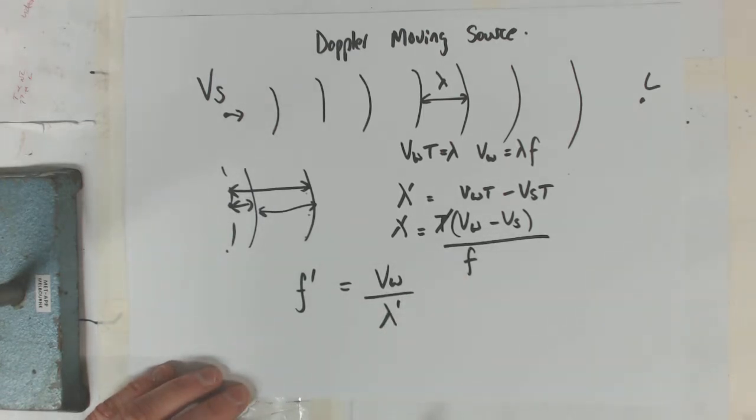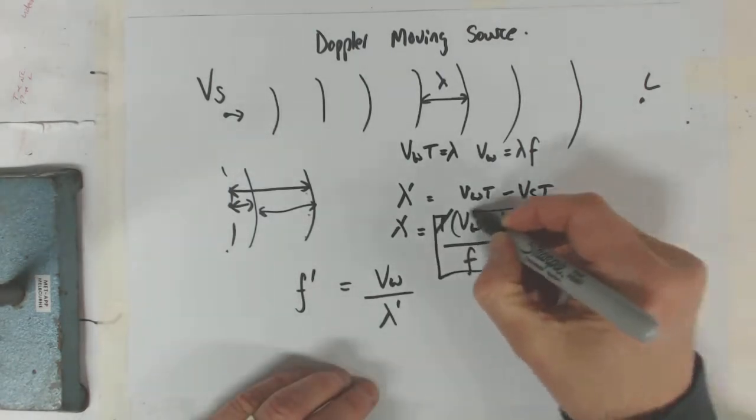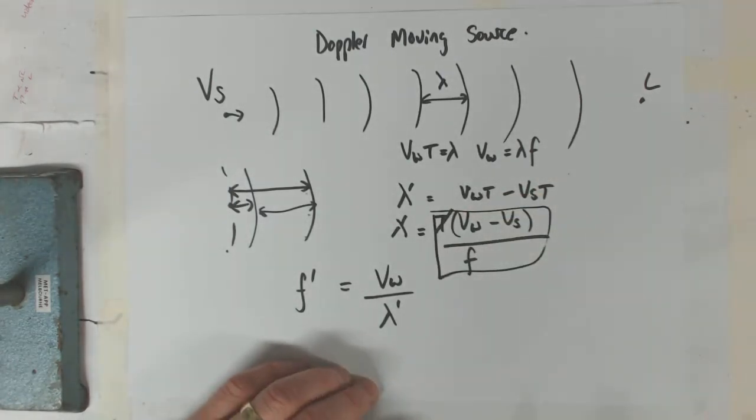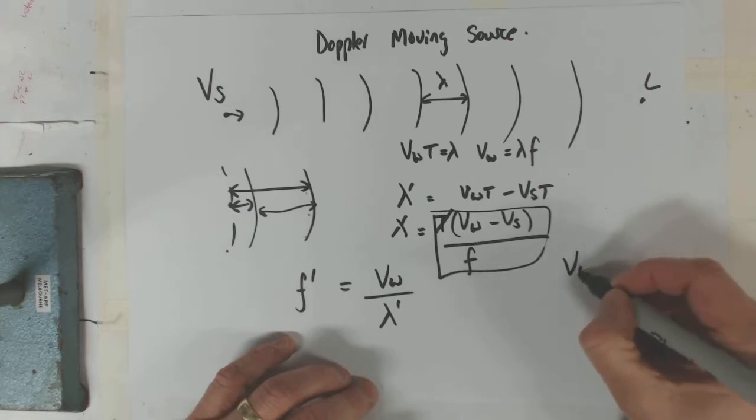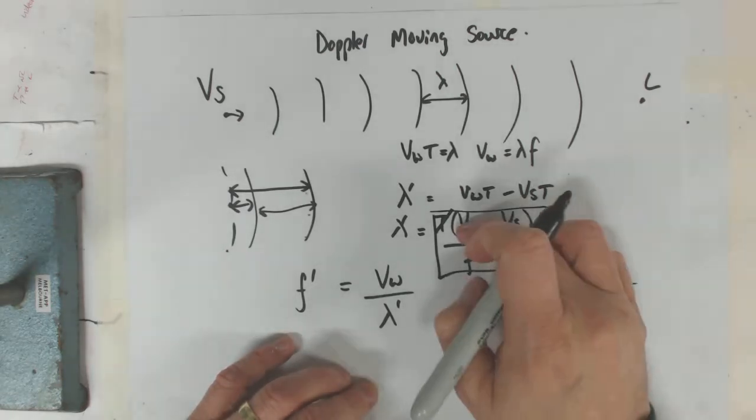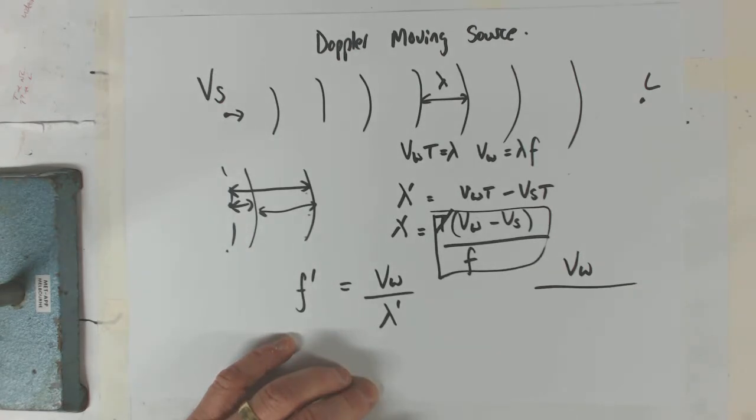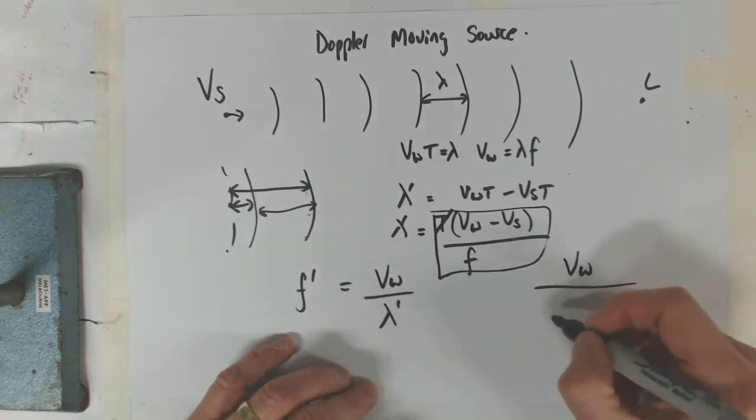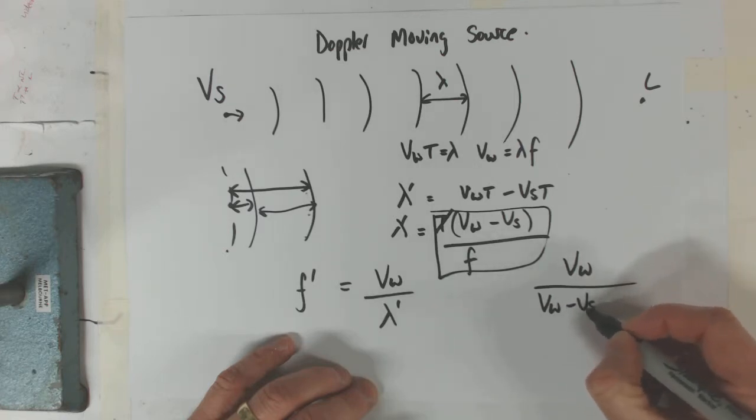So this is our wavelength. So we can go VW divided by this guy here, which is this one. So we divide it by VW minus VS.